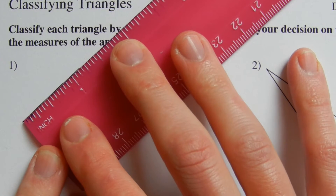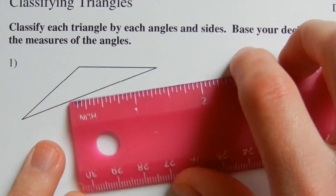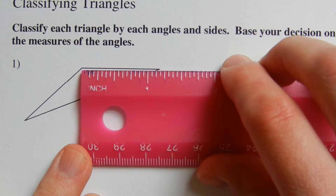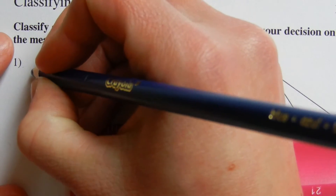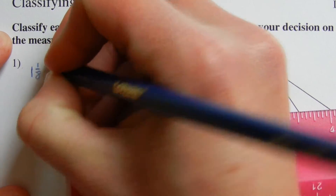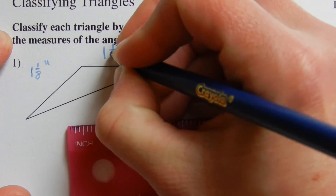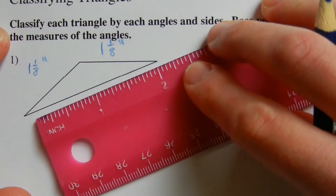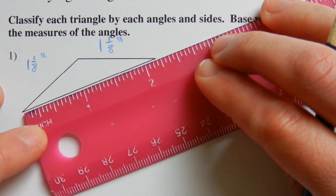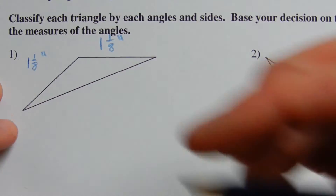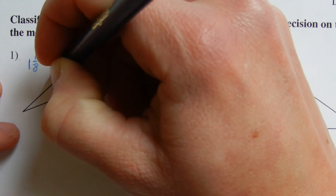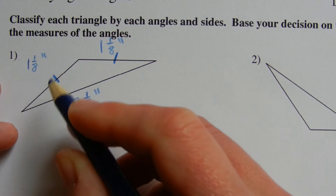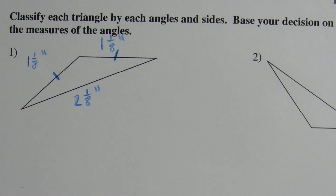Let's get started with number one. I'll measure each of the sides in inches. This first side is approximately one and one-eighth of an inch. The second side is also one and one-eighth. And this last side is approximately two and one-eighth of an inch. From the sides alone, we know we are going to have an isosceles because one and one-eighth equals one and one-eighth, so those two sides are congruent.